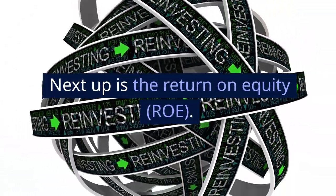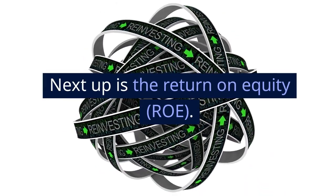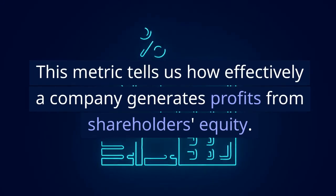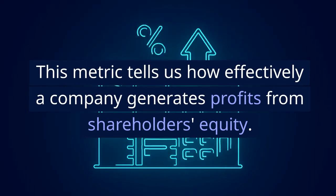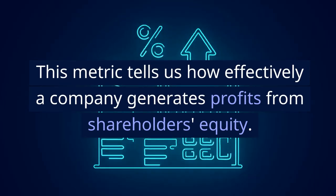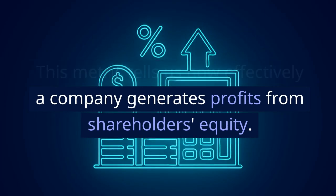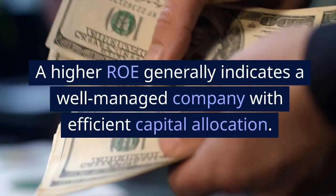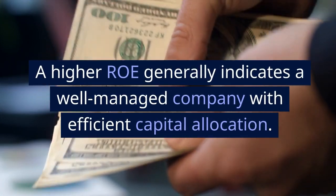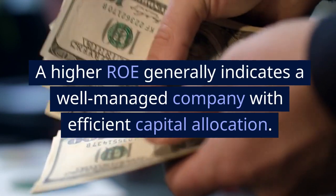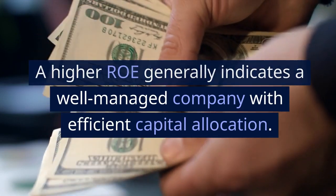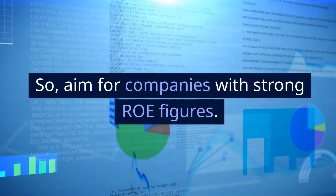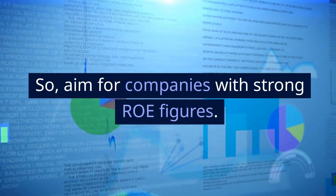Next up is the return on equity (ROE). This metric tells us how effectively a company generates profits from shareholders' equity. A higher ROE generally indicates a well-managed company with efficient capital allocation. So, aim for companies with strong ROE figures.